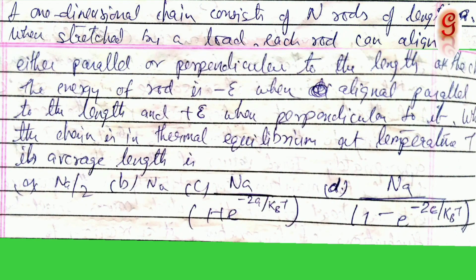The question is: A one-dimensional chain consists of N rods of length A. When stretched by a load, each rod can align itself either parallel or perpendicular to the length of the chain. The energy of the rod is minus epsilon when aligned parallel to the length and plus epsilon when perpendicular to it.